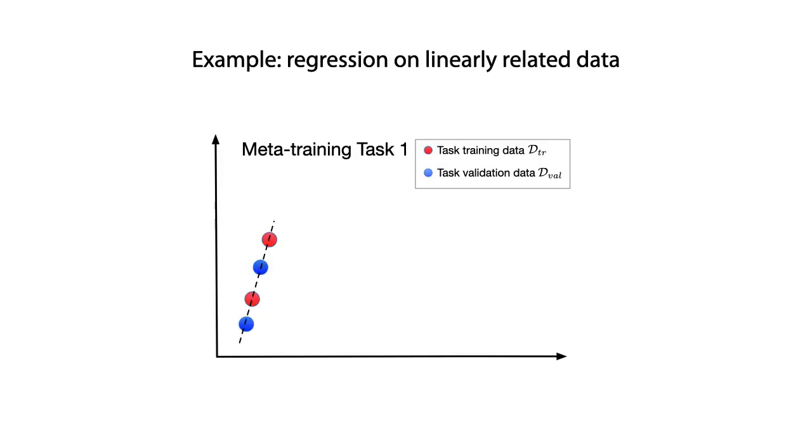Let's consider an illustrative example. Here, each task is a one-dimensional regression on some related data. An algorithm is trained to adapt on the task training data as the red points, and to fit on the validation data as the blue points. The dashed line represents a good adaptive model.